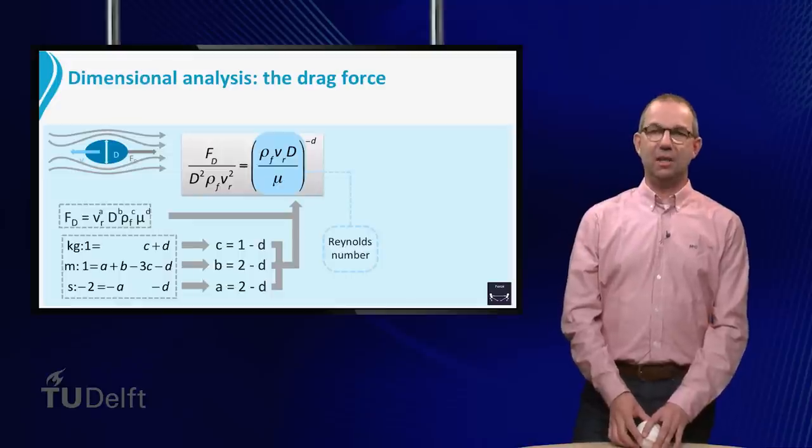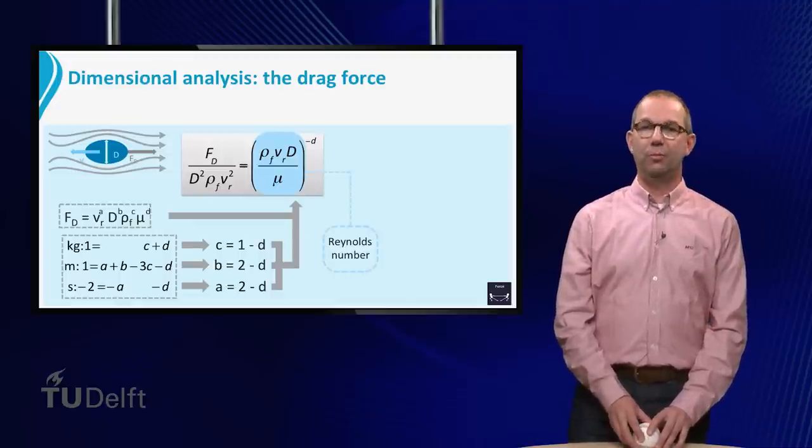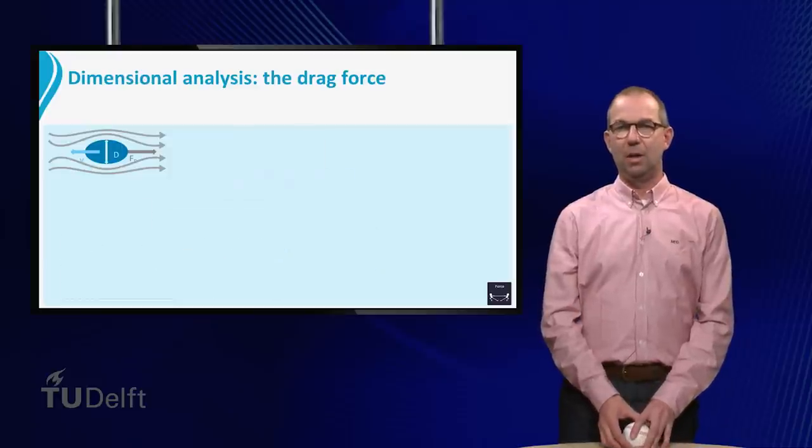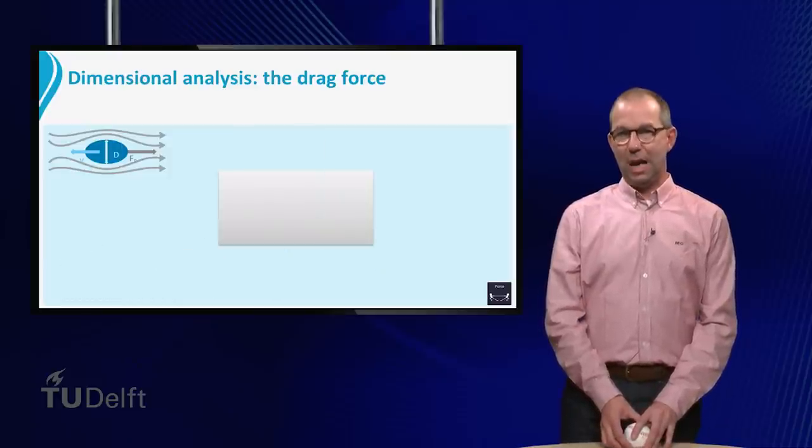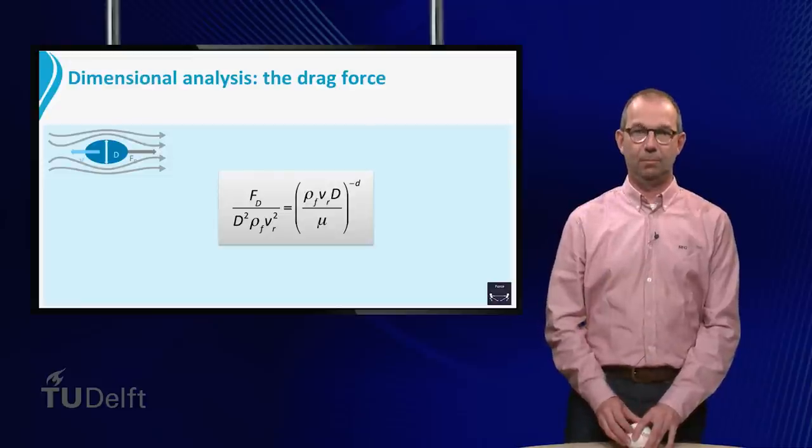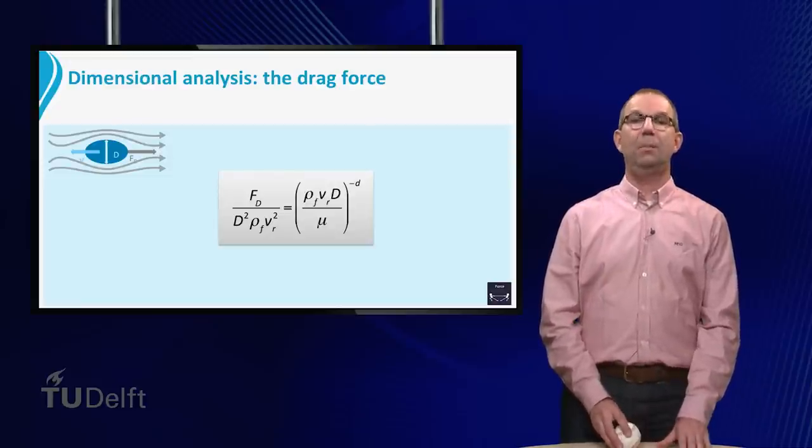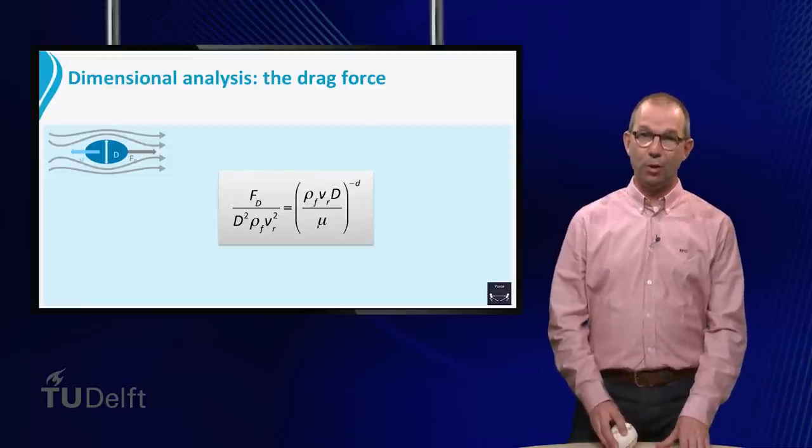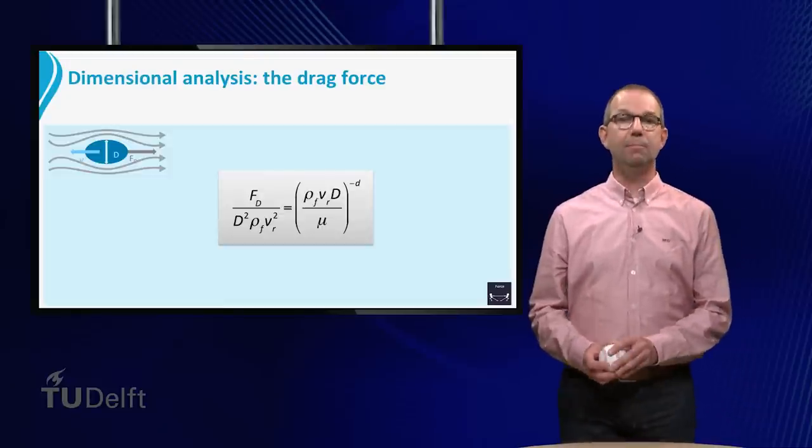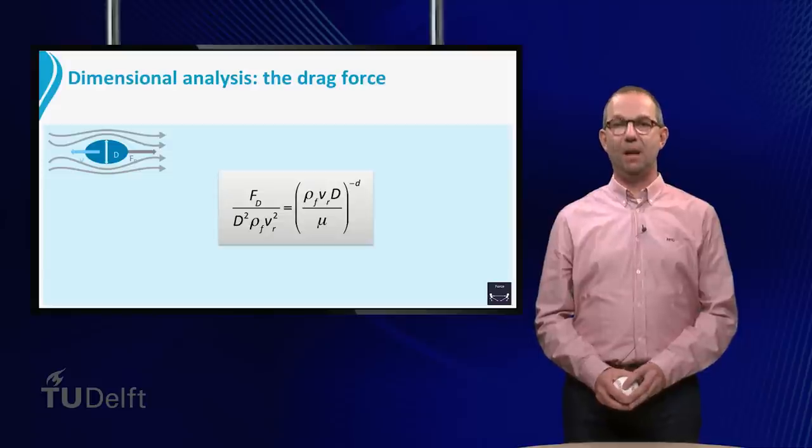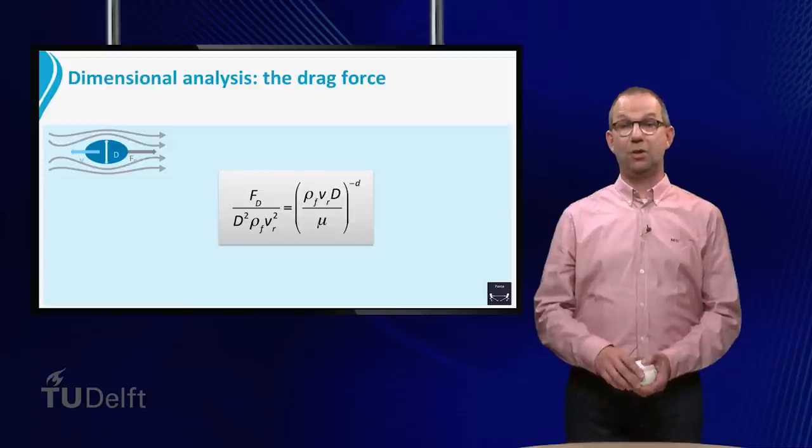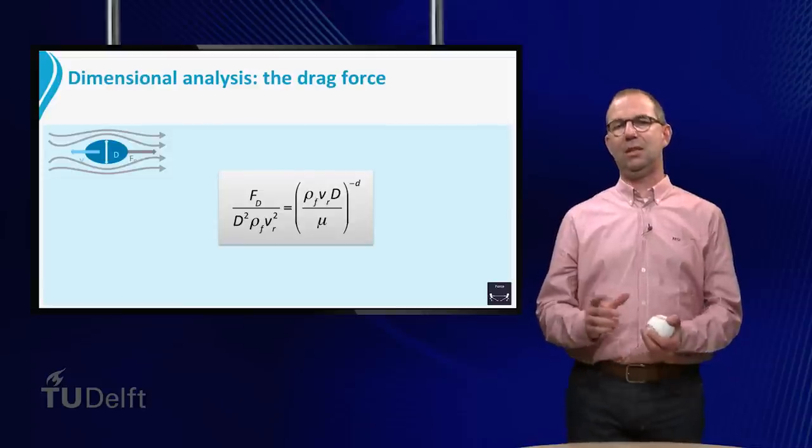Actually we do not mean that the drag force is connected to the parameter on the right side to some unknown power D. We know actually now that the dimensionless drag force is a function of the right hand side. Before we think about this function, let us first look at the left side of the equation. Here we see that the drag force is made dimensionless by D squared times rho fluid Vr squared. Can we understand this?